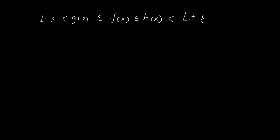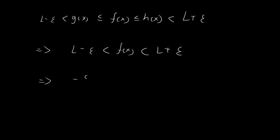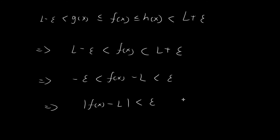From this entire statement, we can now drop the g(x) and h(x) terms, and we get L − ε < f(x) < L + ε. Subtracting L from each term, we get that f(x) − L is trapped between −ε and +ε. And of course, we can now use the absolute value sign to express this as |f(x) − L| < ε.